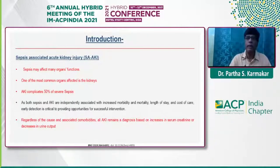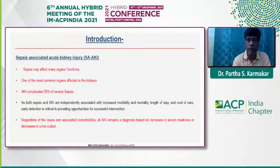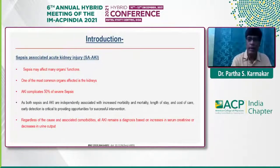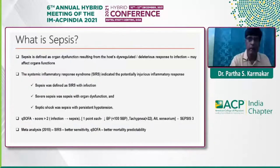Sepsis-associated acute kidney injury: among many organs affected by sepsis, the kidney is the most important. AKI complicates 50% of serious sepsis cases. Regardless of cause and associated comorbidities, AKI remains a diagnosis based on increases in serum creatinine as well as decrease in urine output — these decades-old criteria — though we need to bank upon other markers as well, which will be discussed in later slides.